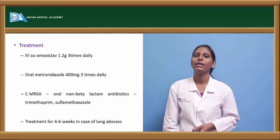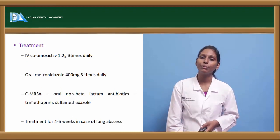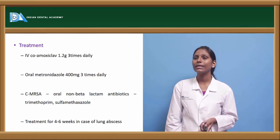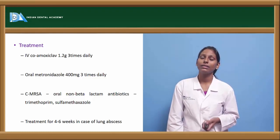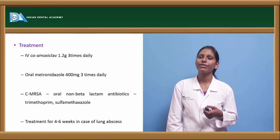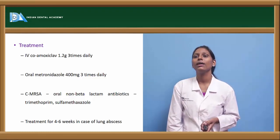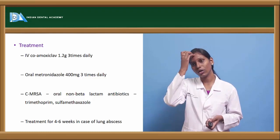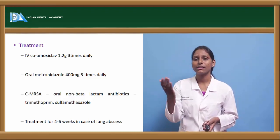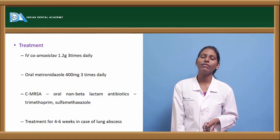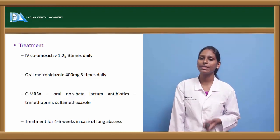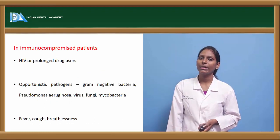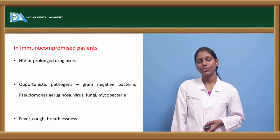Coming to the treatment of suppurative pneumonia, IV co-amoxiclav 1.2 grams three times daily can be given. Oral metronidazole 400 milligrams three times daily can also be given. For MRSA, oral non-beta-lactam antibiotics such as trimethoprim and sulfamethoxazole can be used. Treatment for lung abscess is usually for about 4 to 6 weeks, as long-term treatment is typically required.